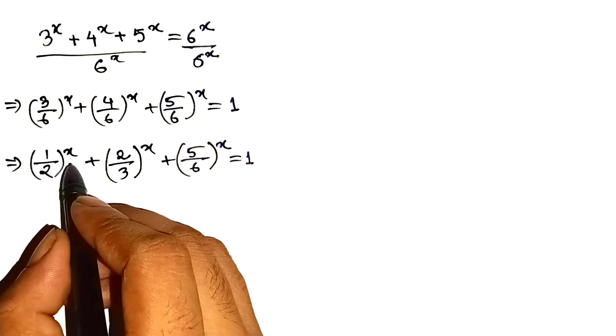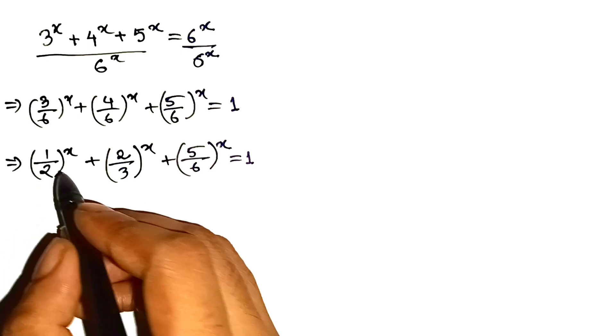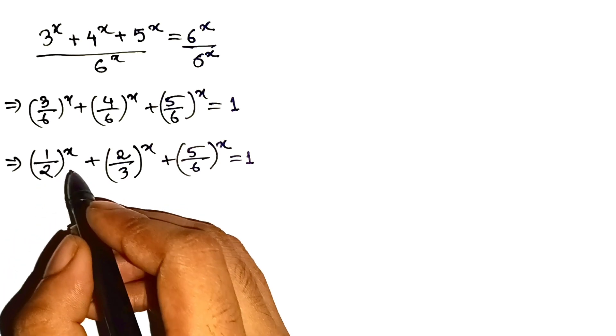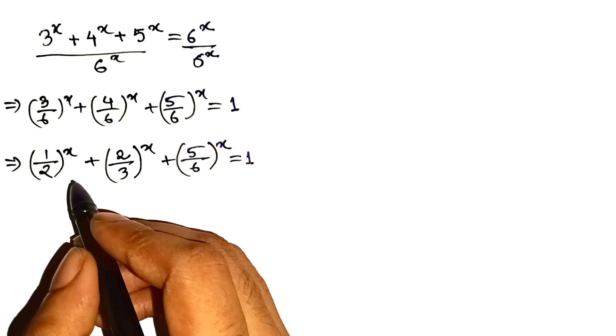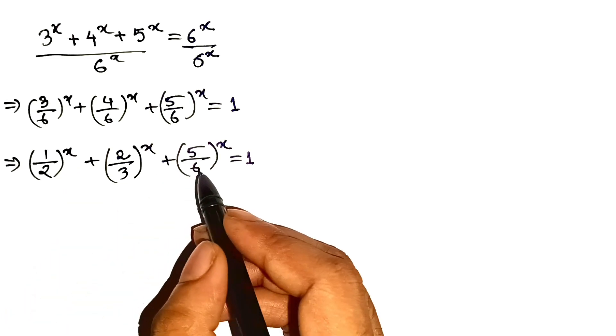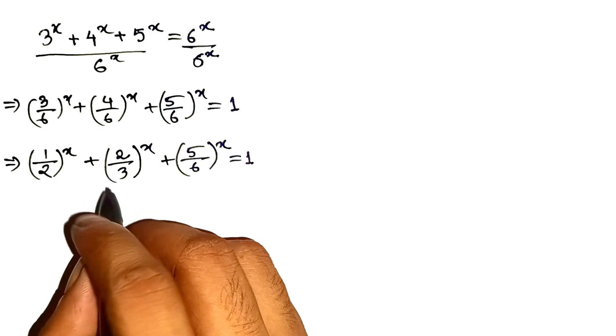1 half to the power of 1 is 0.5, squared to become 0.25, cubed to become 0.125. It just collapses smaller and smaller. The same with 2 thirds, the same with 5 sixths. That shrinking property is the key.